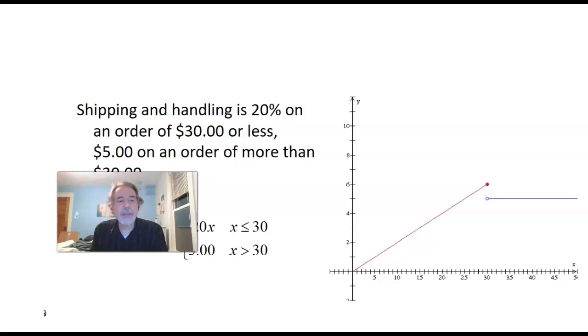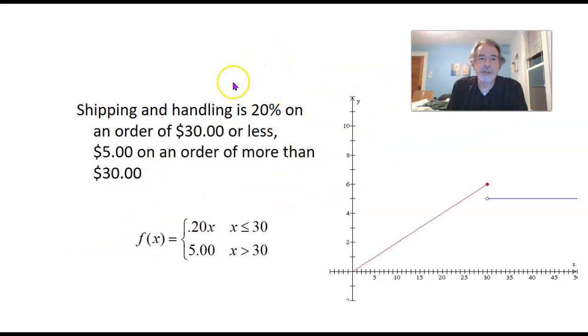Here's a real-world example of where you might see a piecewise function. Say there's a website or a mail order company that when you order from them, charges a shipping and handling charge that depends on the amount of the order. And here's the rule: they charge 20% on an order of $30 or less, and then just a flat $5 on an order of more than $30. So if the amount of your order is any dollar amount $30 or less, f of X is 0.20X, 20% of X, if X is less than or equal to 30. And then it's just plain $5 if X is greater than 30.